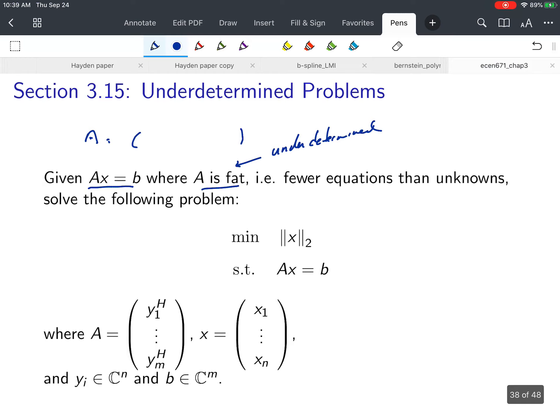That implies there will be many solutions. For example, if we have the matrix [1, 2] and [x1, x2] equals 3, this gives x1 plus 2x2 equals 3, which is the equation of a line. There are many x1s and x2s—you pick any x1 and there's an x2 that satisfies this equation.